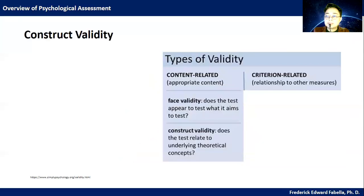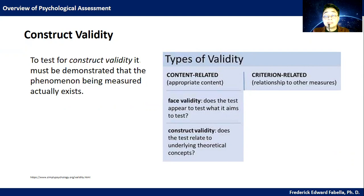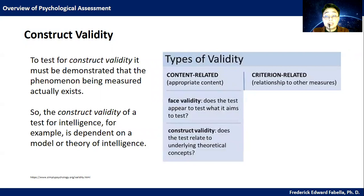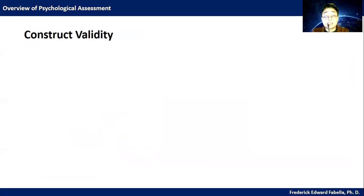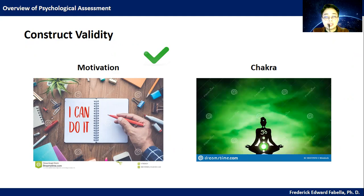Construct validity refers to the extent to which a test captures a specific theoretical construct or trait, and it overlaps with some other aspects of validity. To test for construct validity, it must be demonstrated that the phenomenon being measured actually exists. For example, the construct validity of a test for intelligence is dependent on a model or theory of intelligence. Does motivation exist? Can we measure it? If it exists, we can measure it. But what about chakra? If we cannot measure that, then there is no construct validity.